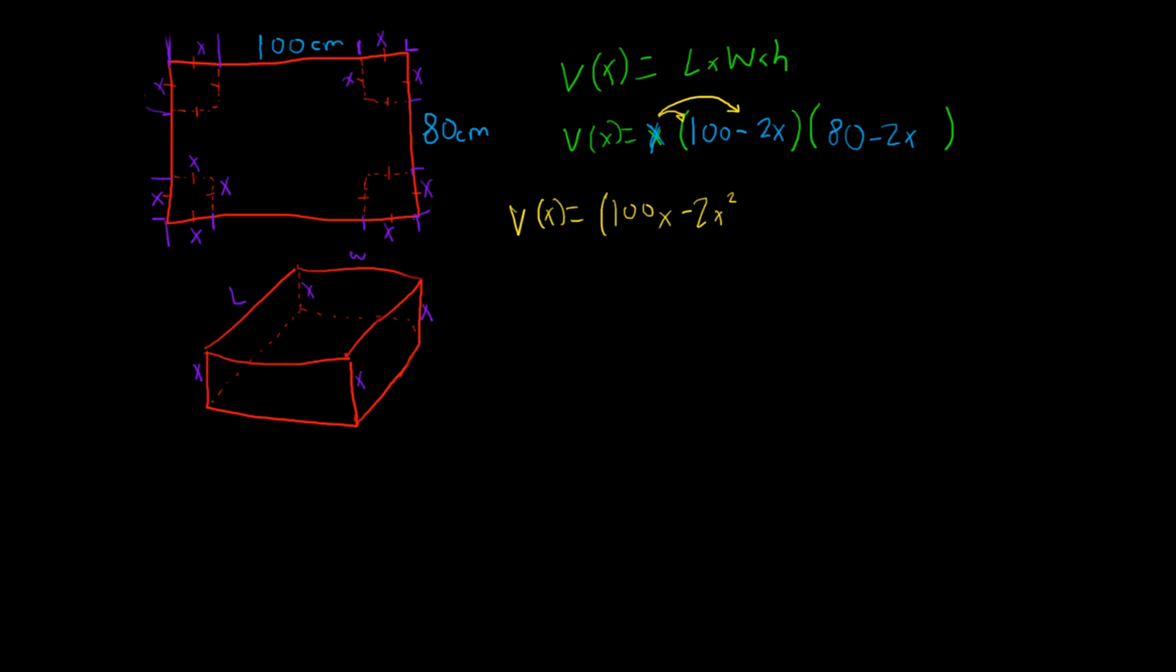So, we got, and then we're going to multiply that by 80 minus 2x. So, the volume of x would be equal to 100x times 80, x is going to be, or just times 80. That's going to be 8,000x, and 100x times negative 2x. That's going to be minus 200x squared.